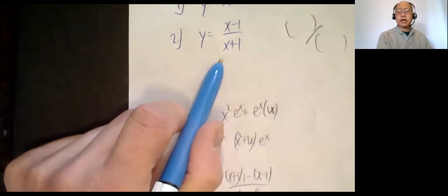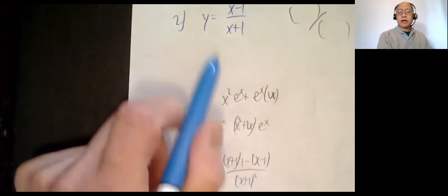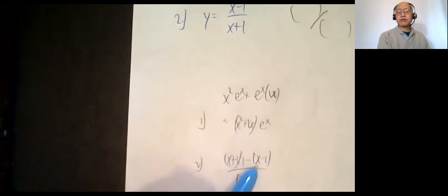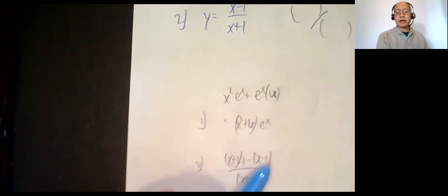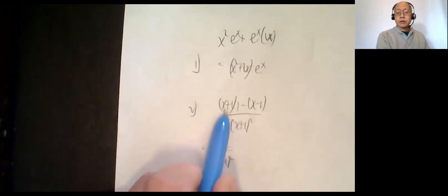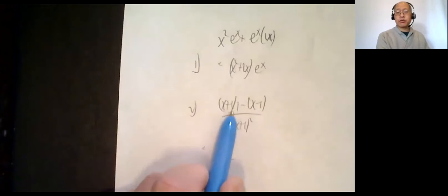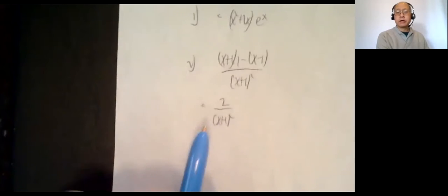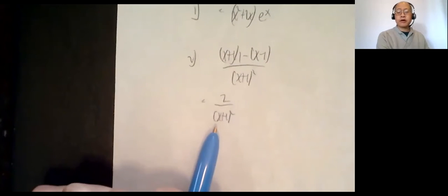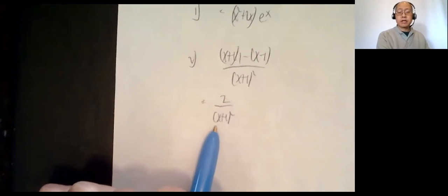Number two: quotient rule. Bottom times the derivative of the top, which is one, minus the top times the derivative of the bottom, which is one — so you don't have to write it. All over (x+1) squared. The x's cancel out, you end up with one minus negative one, which is two. So two over (x+1) squared should be the answer.